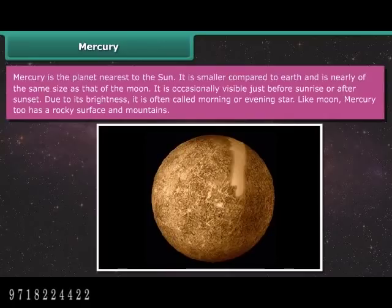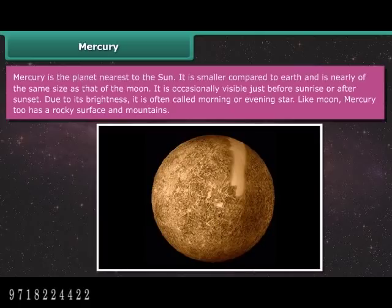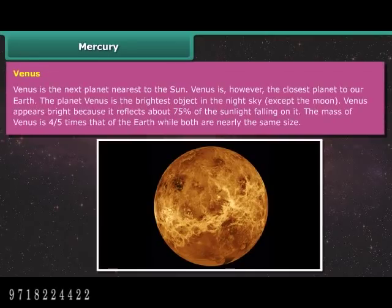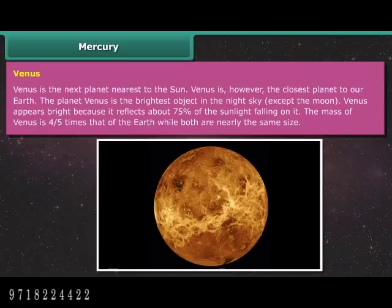Mercury is the planet nearest to the Sun. It is smaller than Earth and nearly the same size as the Moon. It is occasionally visible just before sunrise or after sunset and is often called the morning or evening star. Like the Moon, Mercury has a rocky surface and mountains. Venus is the next planet nearest to the Sun and the closest planet to Earth. It is the brightest object in the night sky except the Moon, reflecting about 75% of sunlight. The mass of Venus is 4/5 times that of Earth, while both are nearly the same size.